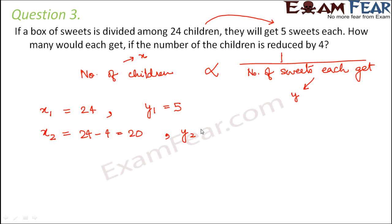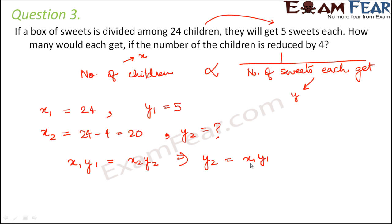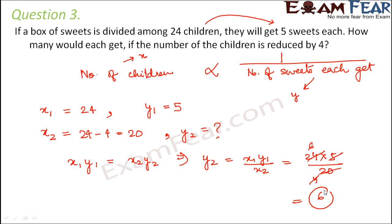As per the relationship of inverse proportion, X1·Y1 = X2·Y2, so Y2 = X1·Y1 divided by X2, which equals 24 × 5 divided by 20. That gives 6, so each child would now receive six sweets.